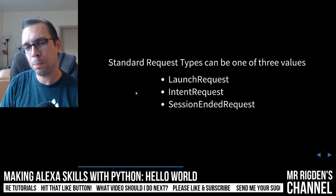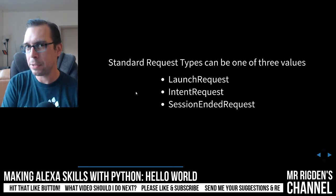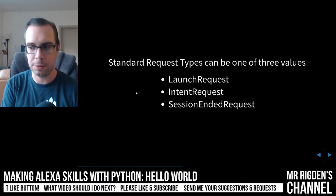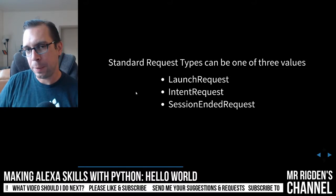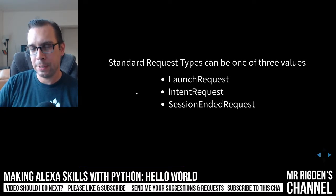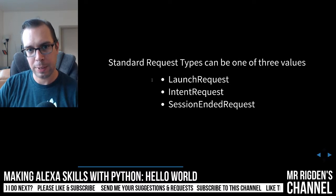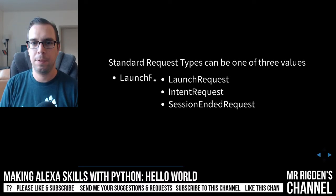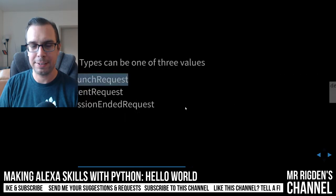We named our skill Dolly, and we made our invocation name Dolly also. If you say 'Alexa, open Dolly', that's going to send just a launch request — there is no intent there. We have a simple if statement that's looking for that string, and if it's found, we're going to call this function and return its return value.